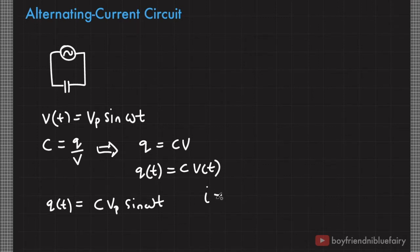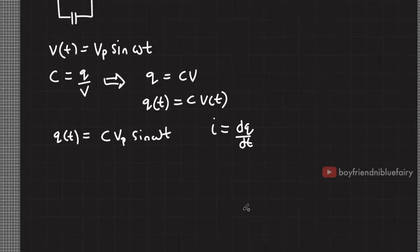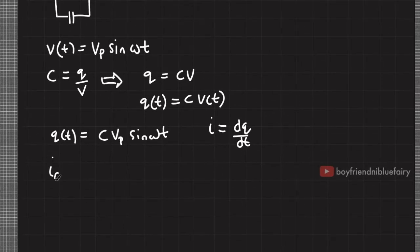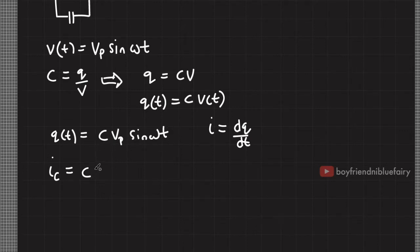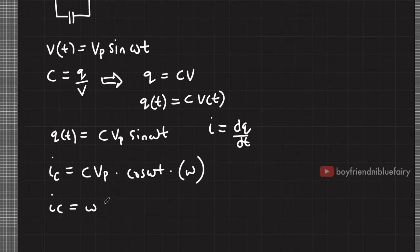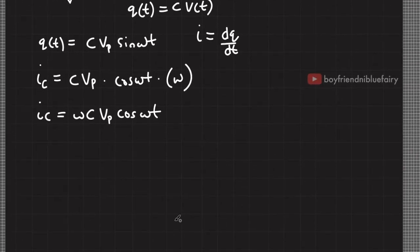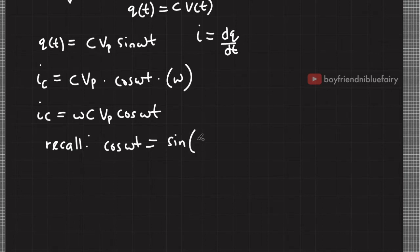Recall that current is the time derivative of charge, or the time rate of change of charge. Therefore, the current across the capacitor is equal to the time derivative of this expression, which is C times V sub P times cosine(ωt) times ω. So rewriting this: I sub C equals ω C V sub P cosine(ωt). Recall the trigonometric identity that cosine(ωt) is equal to sine(ωt + π/2), so I can rewrite this current in terms of sine.